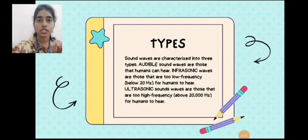Types of sound waves. There are three types of sound waves: audible sound waves, infrasonic, and ultrasonic. Audible sound is the sound waves that humans can hear. Infrasonic waves are those that are too low frequency, that is below 20 hertz, for the human to hear. Ultrasonic sound waves are those that are too high frequency, that is above 20,000 hertz, for the human to hear.